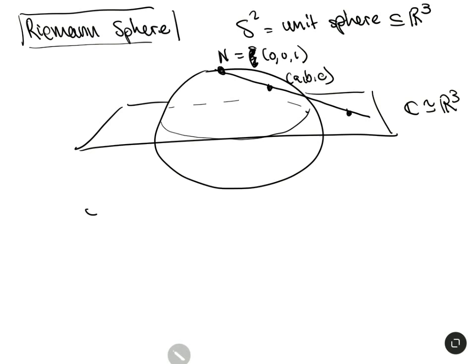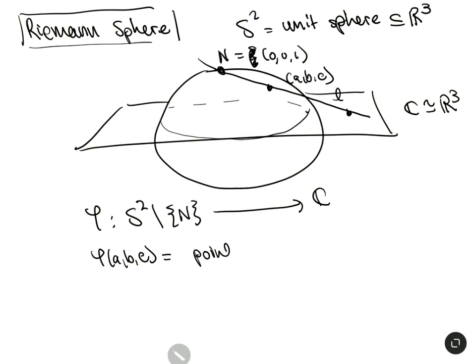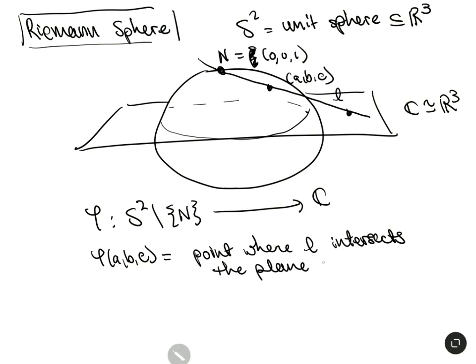We define a map φ from the two-sphere with the north pole removed — where the third coordinate is one — given by φ(a, b, c) = the point where the line L intersects the plane z = 0. Here L is the line through the north pole and (a, b, c). This is the definition of this map — this is the Riemann sphere. You can see that if you let this point get closer and closer to the north pole, these points get further and further out, and the north pole becomes the point at infinity.